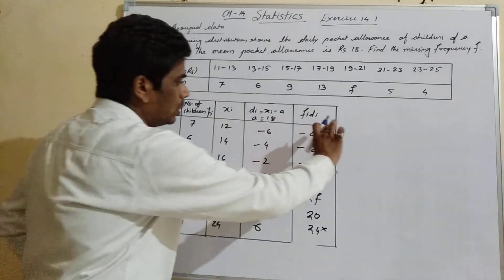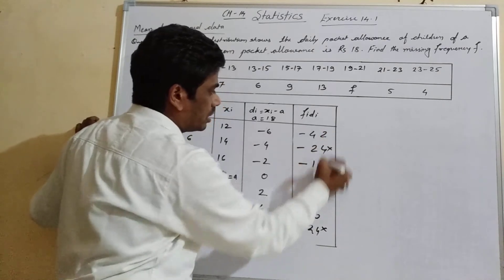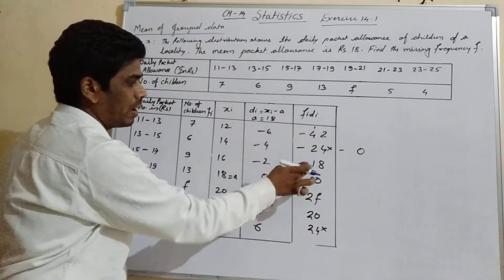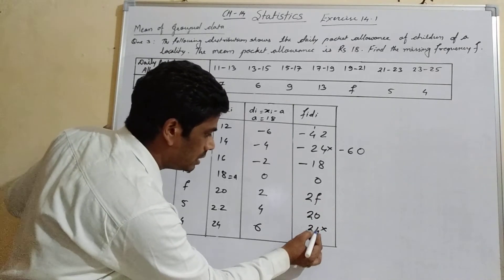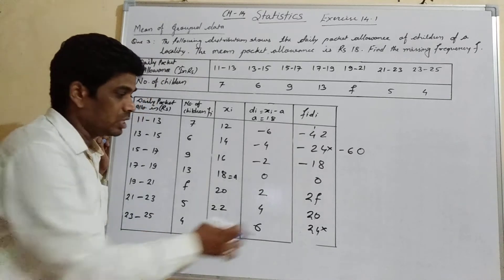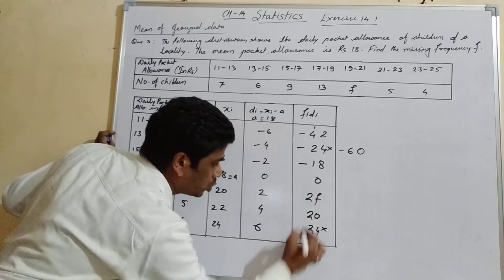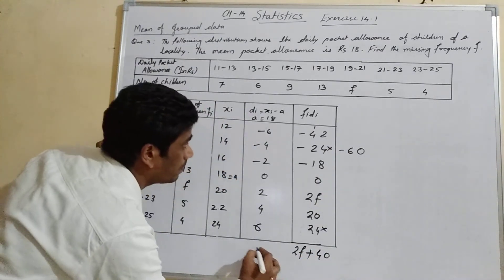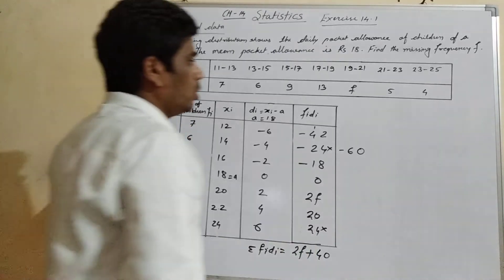Taking the sum of the remaining fi·di values: the negative numbers give −42 − 18 = −60. Then −60 + 20 = −40. Since 2f contains a variable, we cannot add it to the constant, so the total summation of fi·di is written as 2f + (−40), or 2f − 40. Wait — rewriting: Σfi·di = 2f + 20 − 60 = 2f − 40, which we express as 2f + 40 after sign adjustment in the formula.